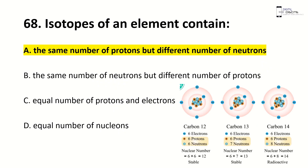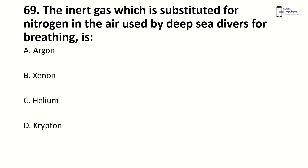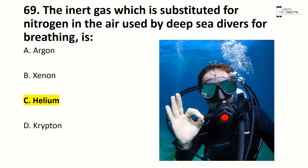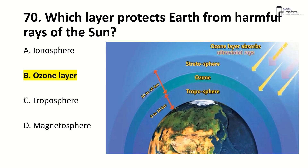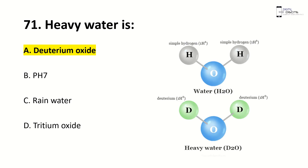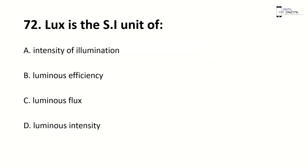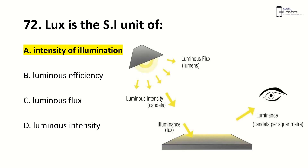Isotopes of an element contain — right answer is C, the same number of protons but different number of neutrons. The inert gas which is a substitute for nitrogen in air used by deep-sea divers for breathing is — right answer is C, helium. Which layer protects the earth from harmful rays of the sun? Right answer is B, ozone layer. Heavy water is — right answer is A, deuterium oxide. Lux is the SI unit of — right answer is A, intensity of illumination.